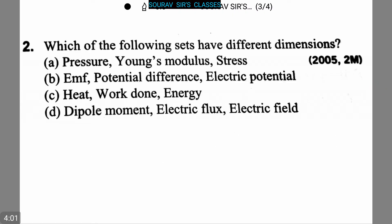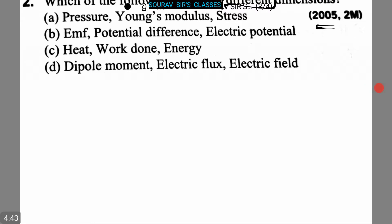Here is our second question, which is very important and also appeared in the year 2005. Which of the following sets have different dimensions? Option A: pressure, Young's modulus, and stress. Option B: EMF, potential difference, and electric potential. Option C: heat, work done, and energy. Option D: dipole moment, electric flux, and electric field.